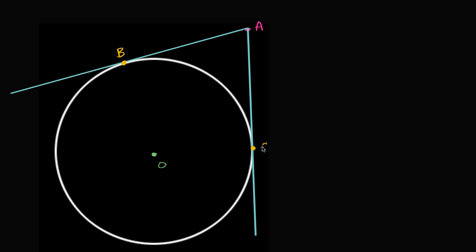This is point C right over here. What I want to prove is that the segment AB is congruent to the segment AC. Or another way of thinking about it, I want to prove that this segment right over here is congruent to this segment.